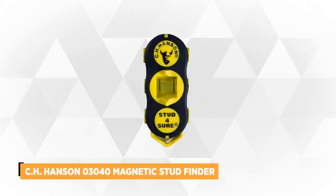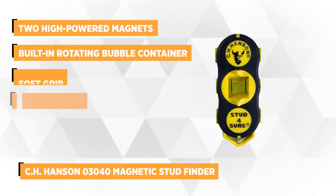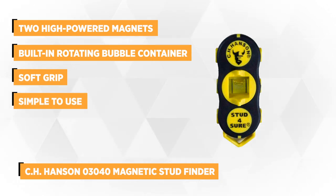At number one is the CH Hansen 03040 Magnetic Stud Finder. This product is not only affordable when compared to other electronic stud finders, but it's reliable, durable, and accurate. It requires no batteries or calibration.